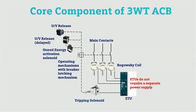The core components of the 3WL ACB include an electronic trip unit which receives current sensing from a robust Rogowski coil. It also has a tripping solenoid connected to the operating mechanism with breaking and latching functions, an undervoltage release coil, an undervoltage delayed release coil, and a stored energy activation solenoid.